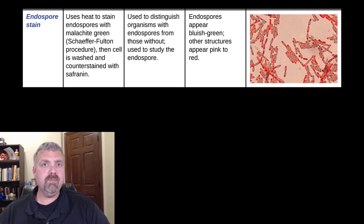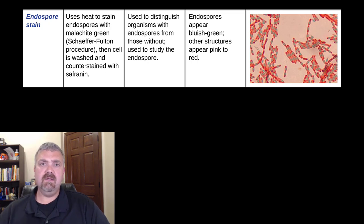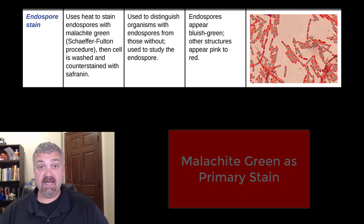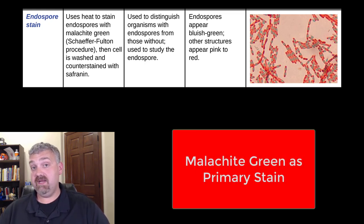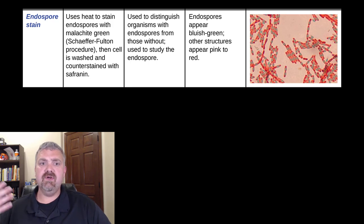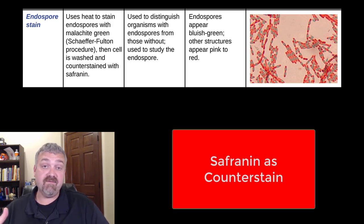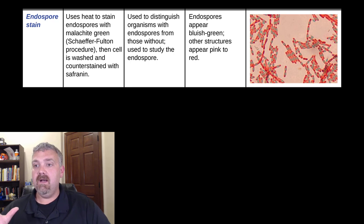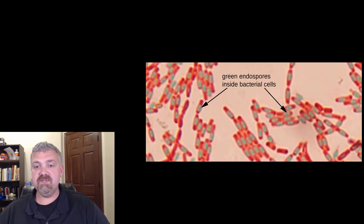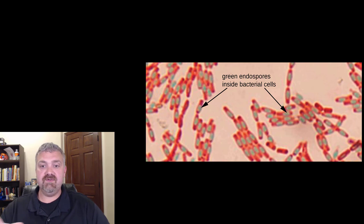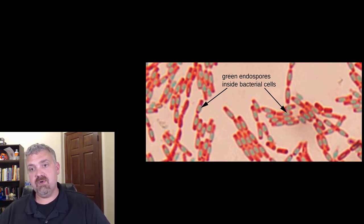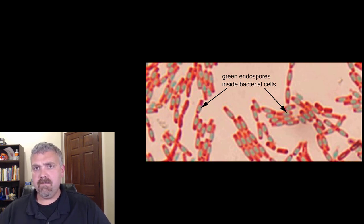There are multiple staining techniques to look for spores, but primarily you're going to use malachite green as the stain that colors the actual spores green. Then, whatever technique you use, you counter stain with safranin — the same safranin used in the gram stain. Here we see a close-up: the green spores inside the regular bacterial cells, and some vegetative bacterial cells that don't have spores. The spore stain is useful when you're looking for Clostridium or Bacillus.